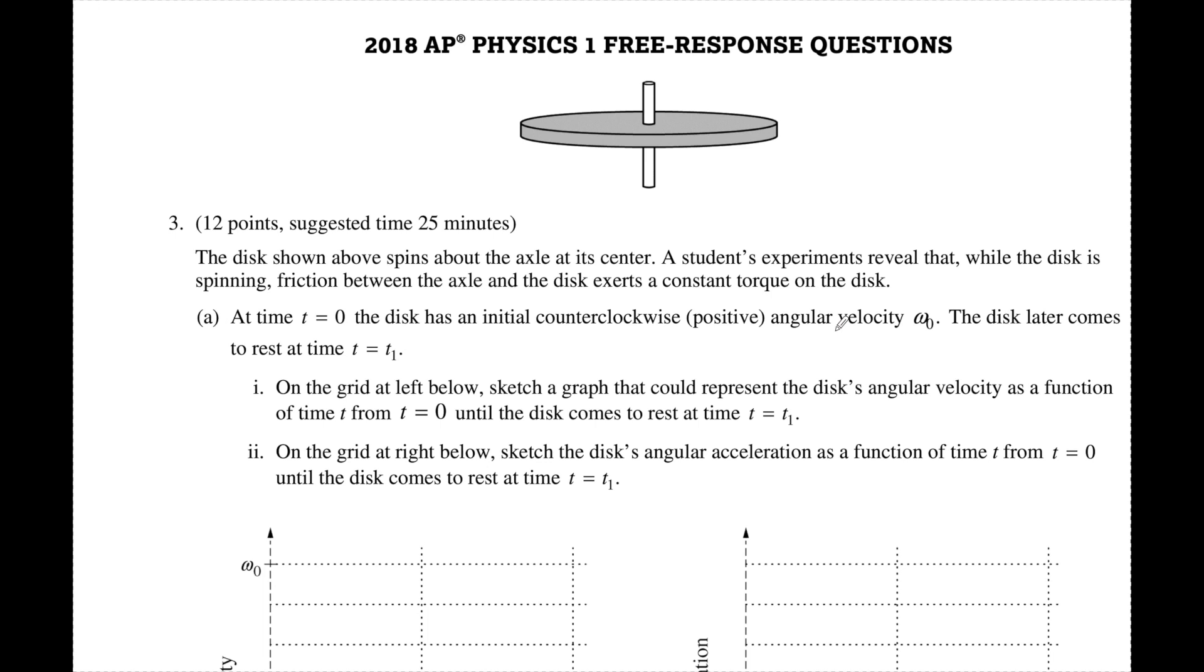The disc shown above spins about an axle at the center. The student's experiments reveal that while the disc is spinning, friction between the axle and the disc exerts a constant torque on the disc. That constant, that's going to be very important. At time zero, the disc has some counterclockwise angular velocity. And counterclockwise is always positive. The disc later comes to rest at T1.